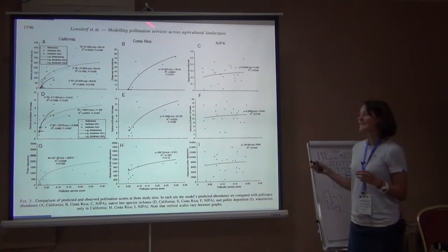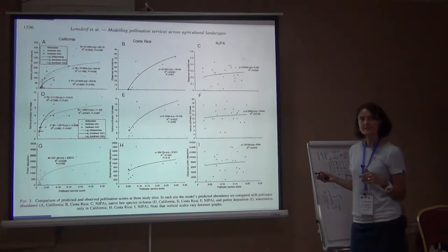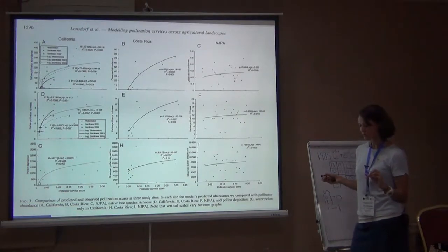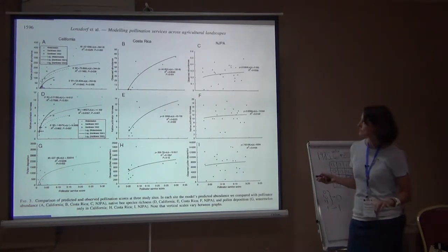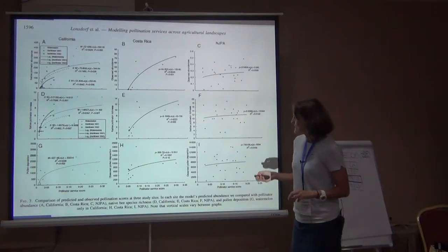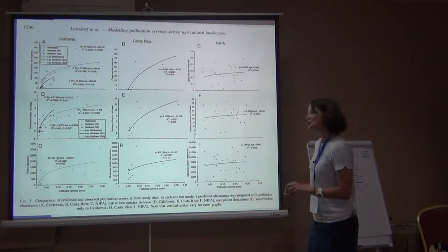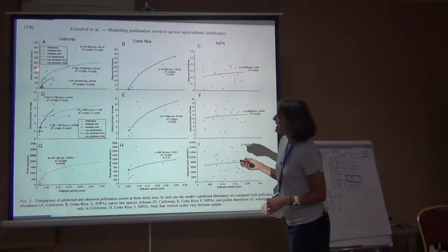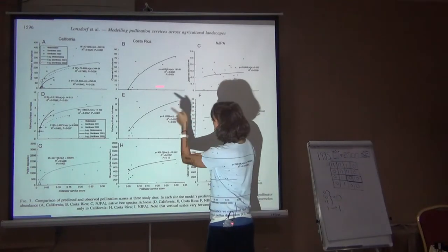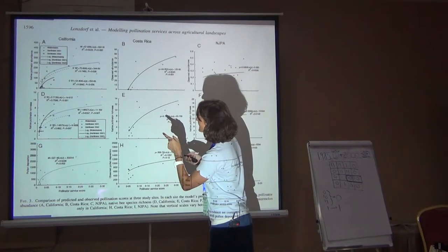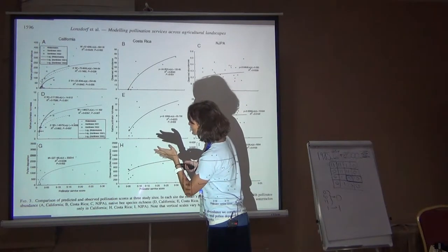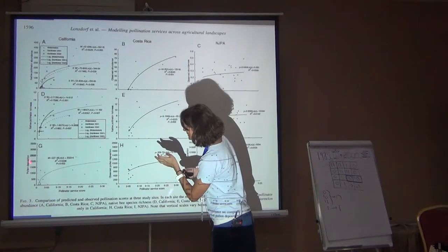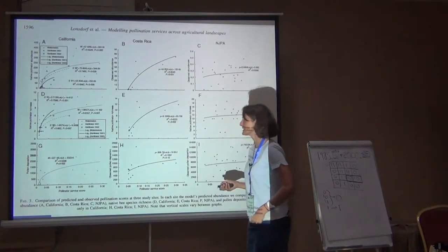These two were highly agricultural landscapes. This one was kind of a mixed landscape. All of these were done at, I'm almost sure, 30 meters spatial resolution. On the X axis, you have that pollination service score — the output of the model. On the Y axis, on the top row, you have pollinator abundance. On the middle row, you have species richness. And on the last row, you have pollen deposition.